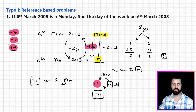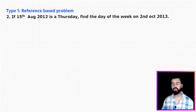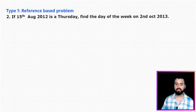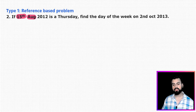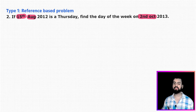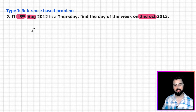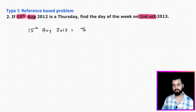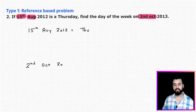This complementary approach with respect to seven is a shortcut to get your answer easily. Now let me show one more problem. If 15th August 2012 is a Thursday, find the day of the week on 2nd October 2013. This question is a little different because here the reference date and the target date are different.